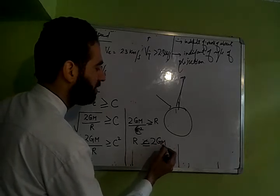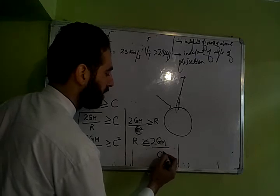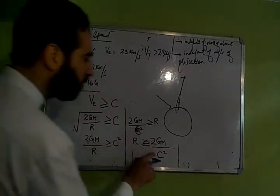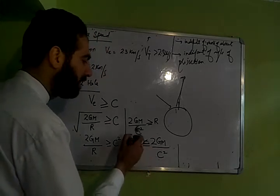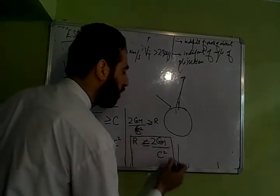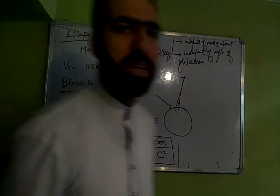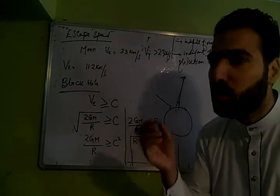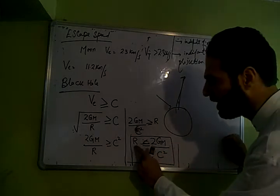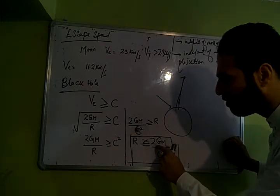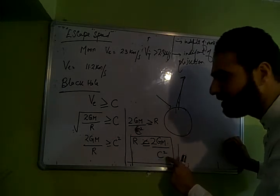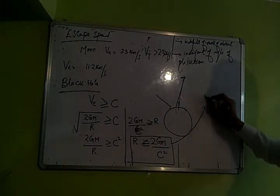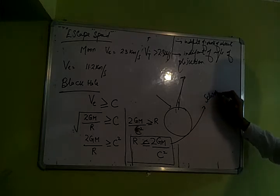To batao yeh jo radius hoga is ka jo maximum radius hoga yahan pe jo r nikla, woh nikla na, ya woh is se zyada hoga? Is se kam hoga ya is ke barabar? Kitna hoga? 2 gm by c square. g is the gravitational constant and m is the mass of the black hole. c is the speed of light.